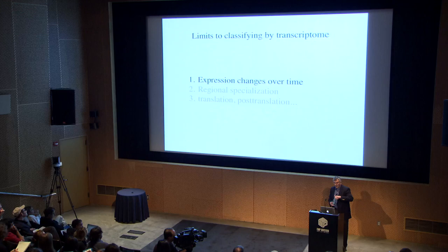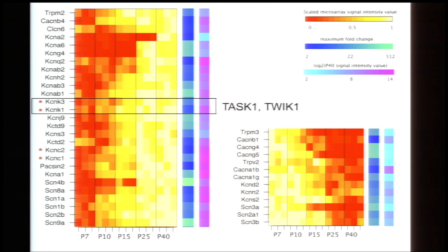There are several caveats to this approach. First, expression changes over developmental time. As a brief example, several ion channels change their expression over the first few weeks of development in fast-spiking basket cells. We can use this to identify ion channels underlying specific properties by correlating the emergence of those properties with expression changes and then interfering with their function.